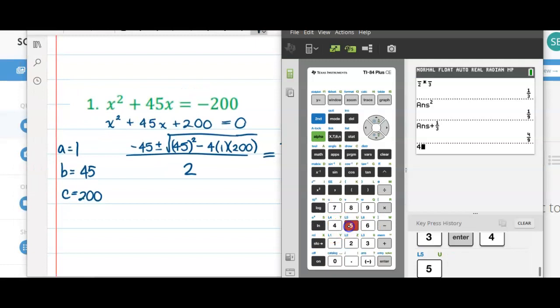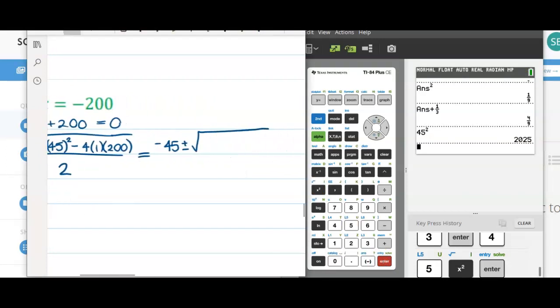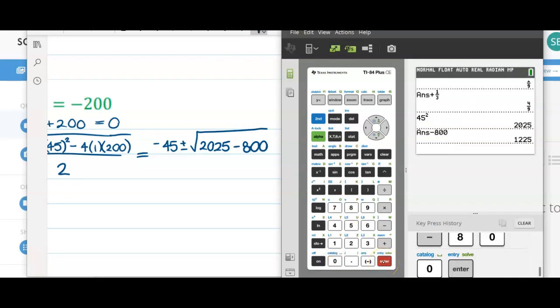We can do 45 squared, which is 2,025. We can also do 4 times 1 times 200, which is 800. We're subtracting that. So what's inside the radical ends up being 1225.